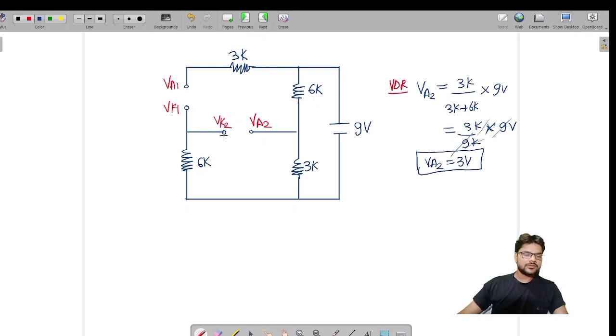Now I have to find out this cathode terminal voltage, that is VK2. Since no current is coming in 6K and 3K, I is 0 here and voltage across this 6K will also be 0, and this VK2 will also be 0. So VK2 equals to 0. Now voltage across diode D2, VAK2, I get 3 minus 0 equals to 3V.